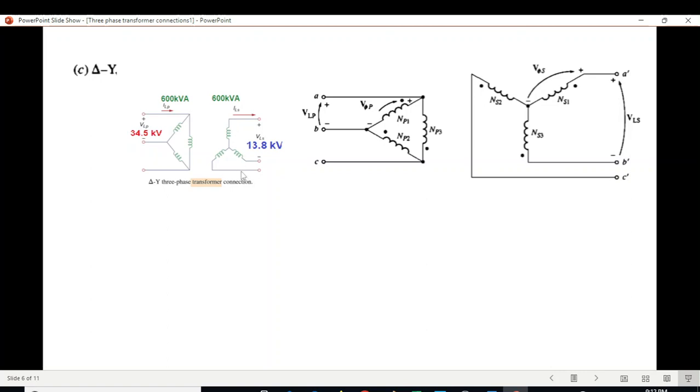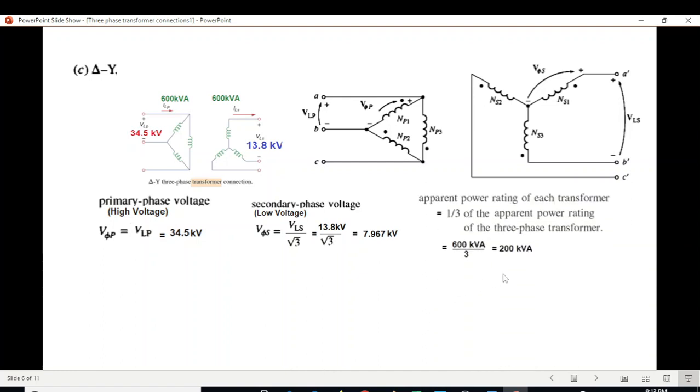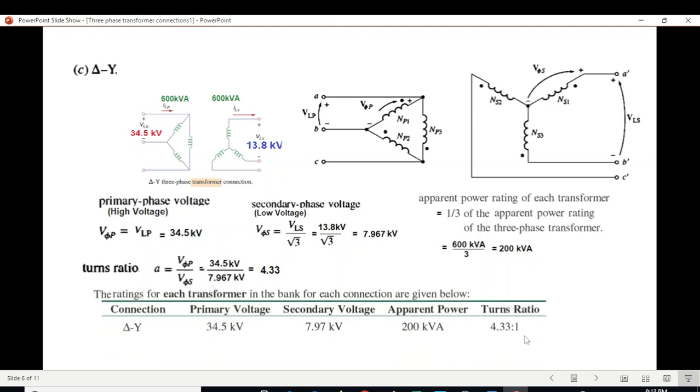Part C is Delta-Y. In Delta, the primary line voltage and phase voltage are the same, so 34.5. With Y on secondary, phase voltage is 13.8 divided by √3 equals 7.967. Power remains the same, 600 divided by 3. Turn ratio we can calculate as primary divided by secondary equals 4.33. In tabular form we write this entry.